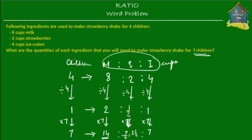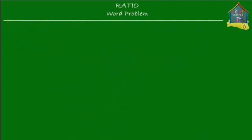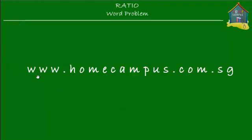So those were the two methods. There are other methods as well — for example, the fraction method. You could figure out the relation between four and seven and use that fraction to find the quantities of each ingredient. That's the beauty of maths: no matter which method you use or prefer, you still get to the same answer.